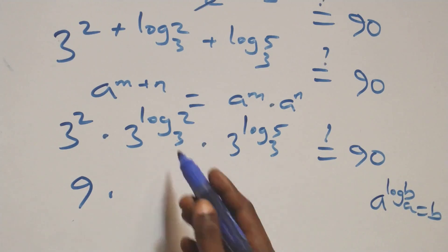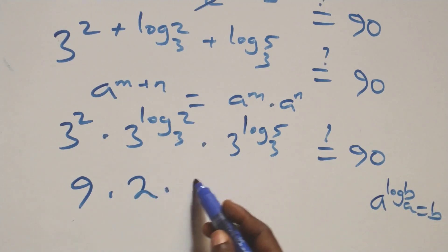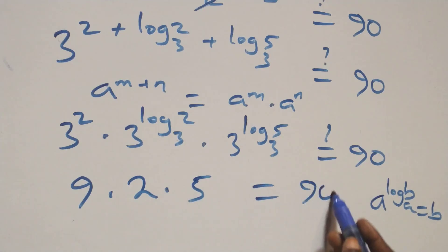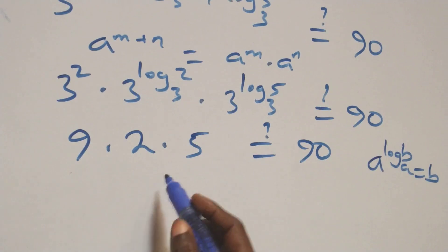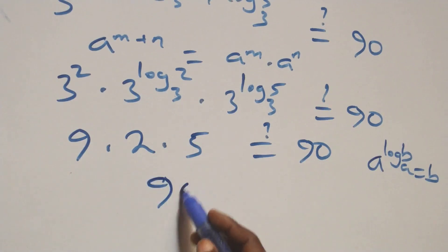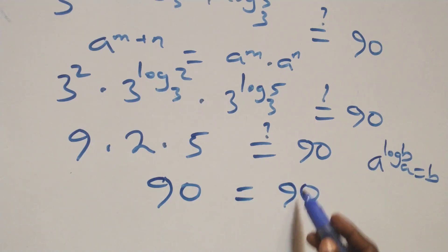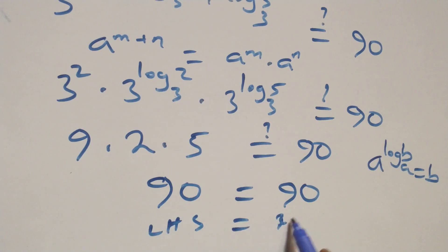This simplifies to 9 times 2, which is 18, times 5, which equals 90. So the left-hand side equals 90, which is equal to the right-hand side. Therefore, our solution is verified.